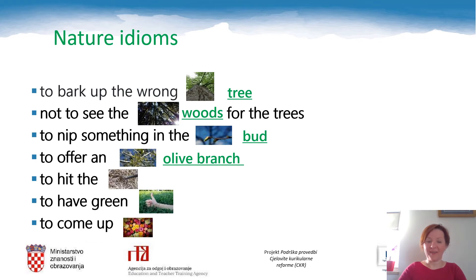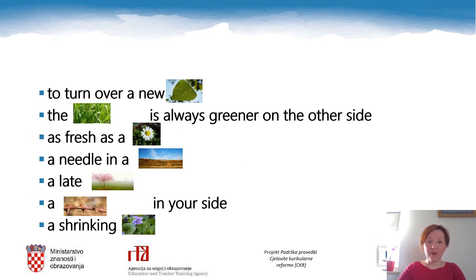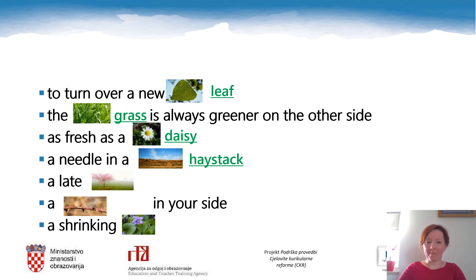To hit the hay. To have green fingers — or a green thumb. To come up roses. To turn over a new leaf. The grass is always greener on the other side. As fresh as a daisy. A needle in a haystack. A late bloomer. A thorn in your side. And the last one: a shrinking violet.